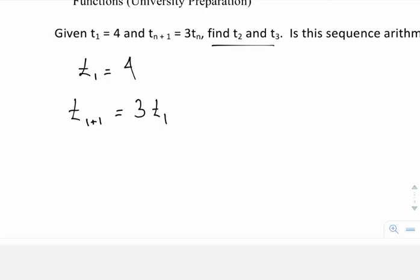t2 is actually 1 plus 1 is equal to 3 times t1. Now what I'm doing here is I'm replacing the n in both the left and right side with a 1.